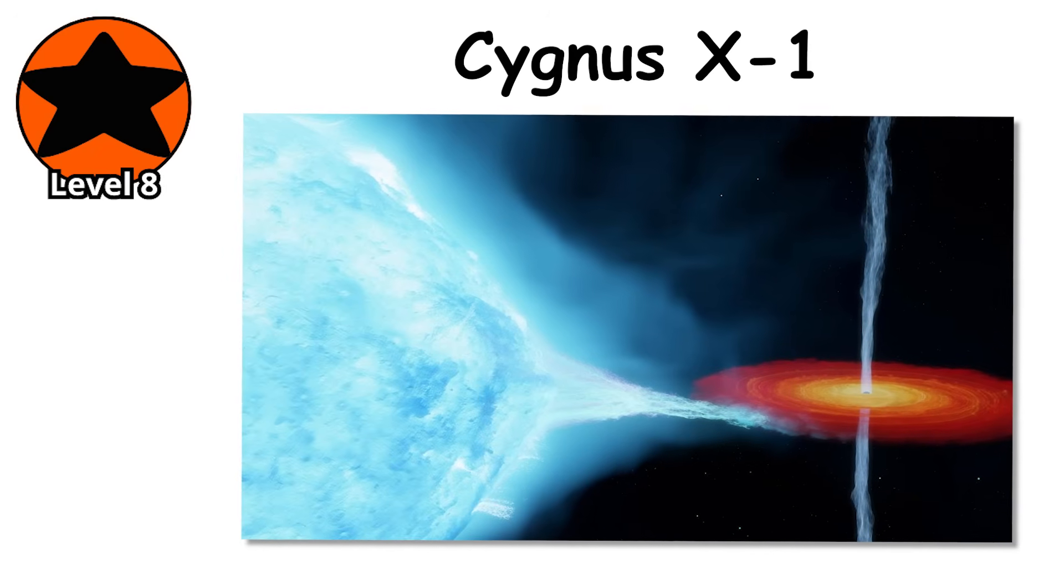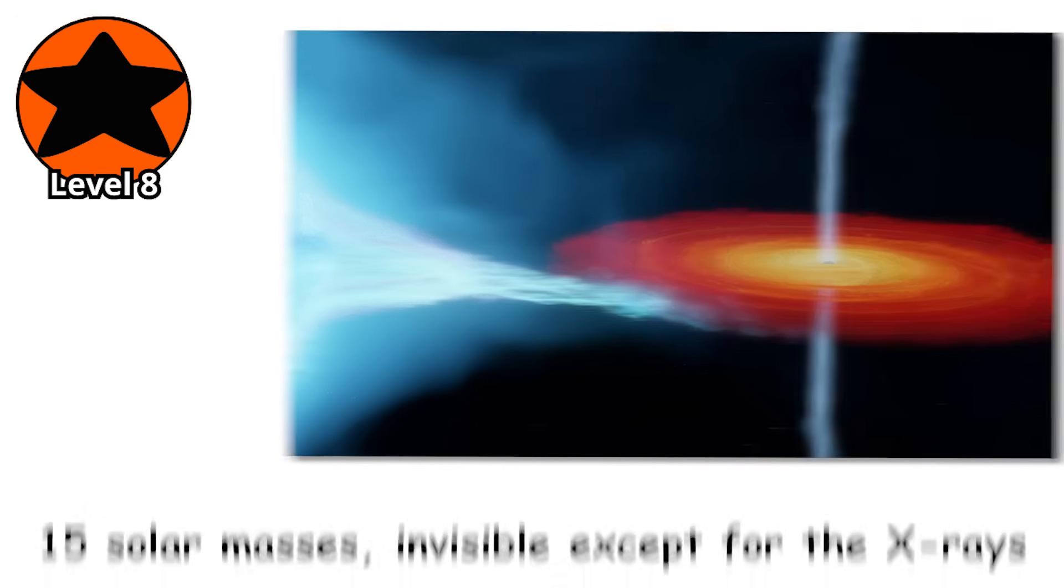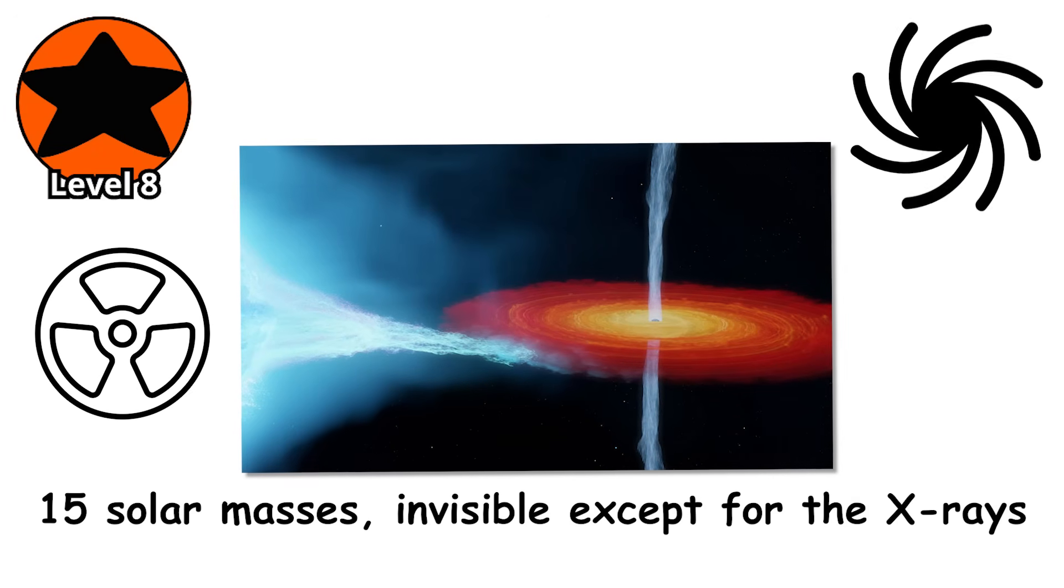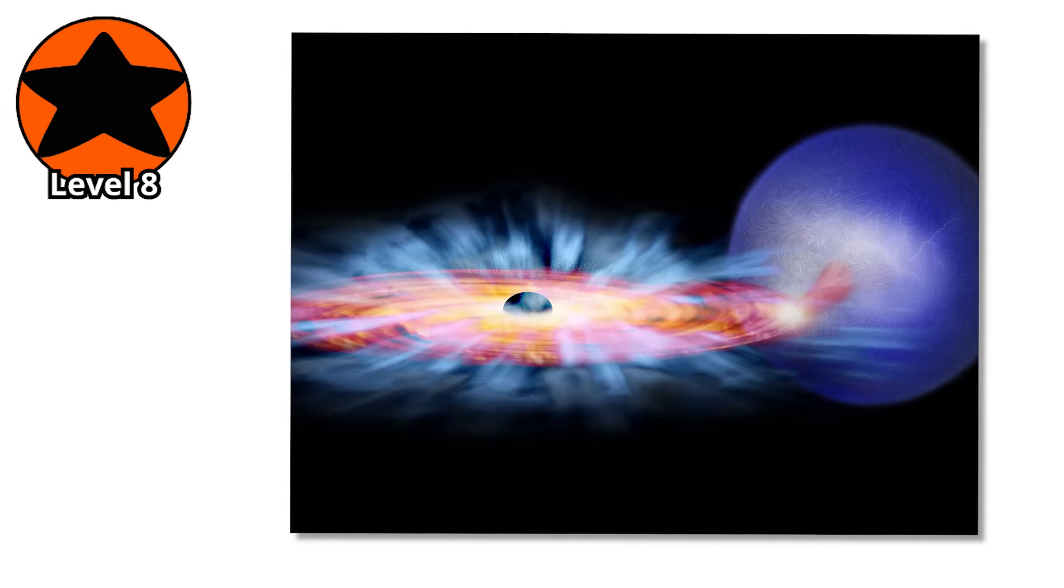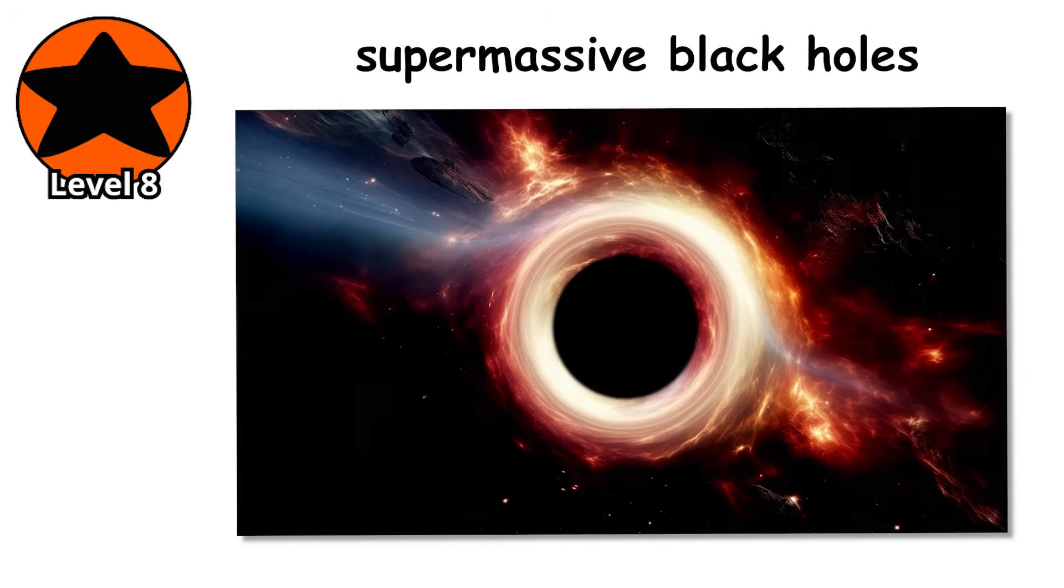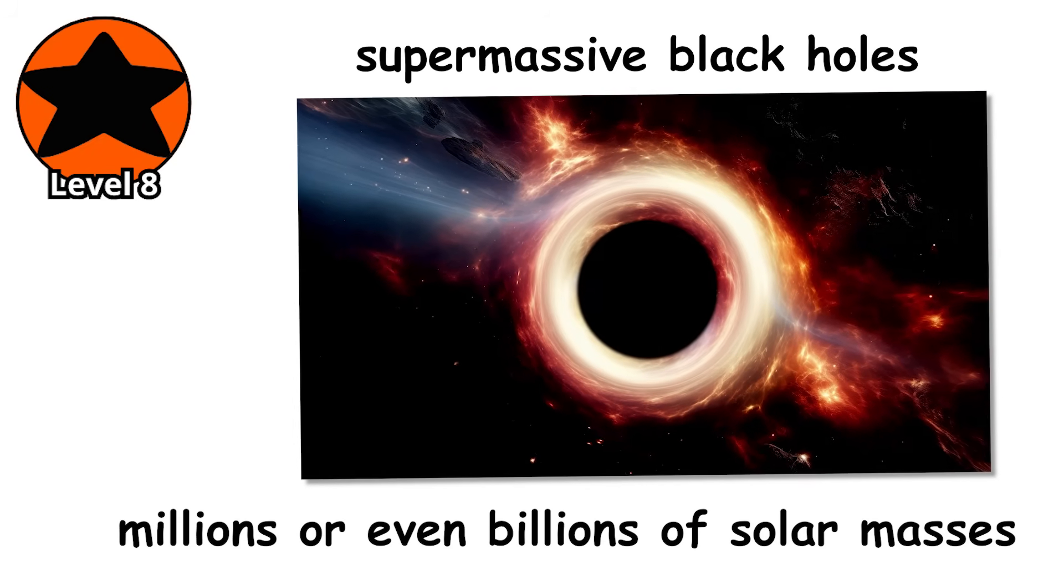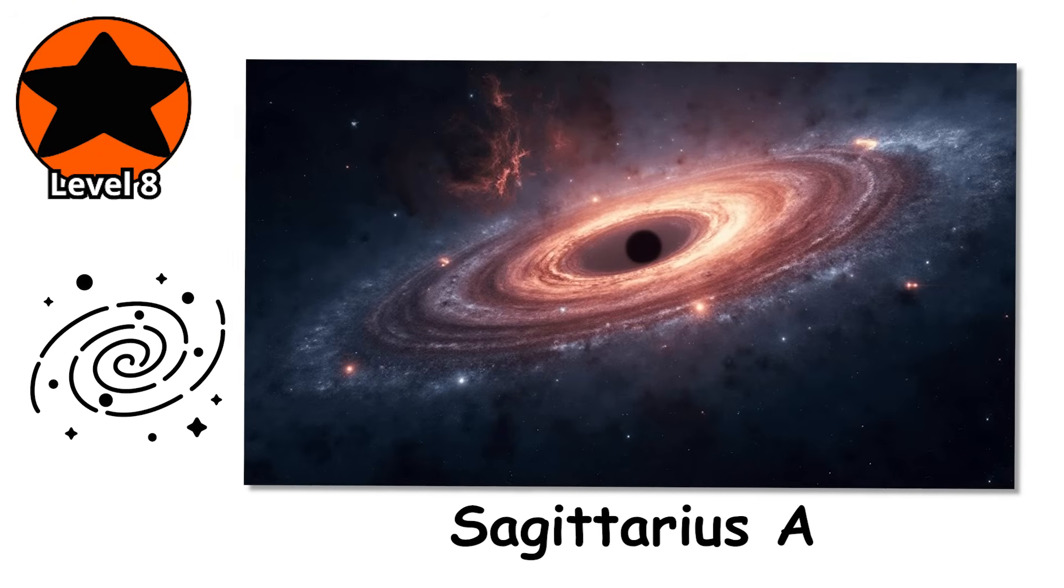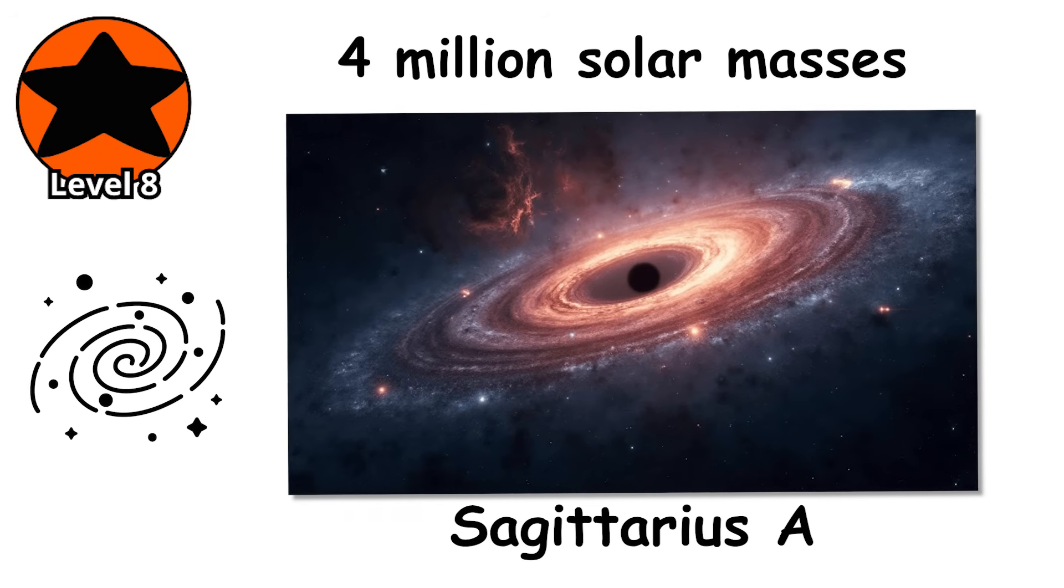Stellar-mass black holes formed from individual dying stars range from about three to one hundred solar masses. Cygnus X-1, one of the first black holes ever discovered, is about 15 solar masses, invisible except for the X-rays emitted by gas spiraling into it from a companion star. But stellar-mass black holes are just the beginning. At the centers of galaxies, there are supermassive black holes, monsters containing millions or even billions of solar masses. Sagittarius A*, the black hole at the center of the Milky Way, is about 4 million solar masses.